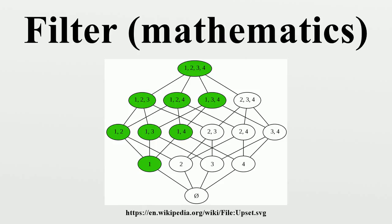Properties of a Topological Space: Let X be a topological space. X is a Hausdorff space if and only if every filter base on X has at most one limit. X is compact if and only if every filter base on X clusters. X is compact if and only if every filter base on X is a subset of a convergent filter base. X is compact if and only if every ultrafilter on X converges.